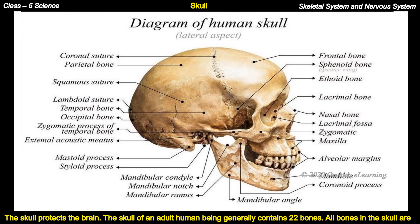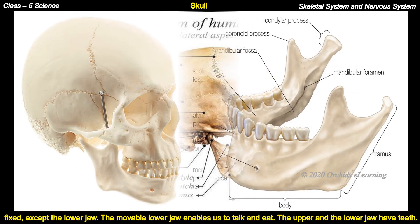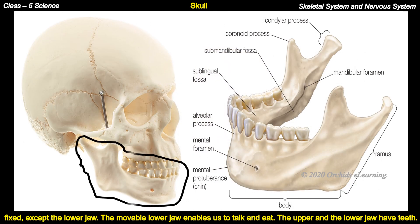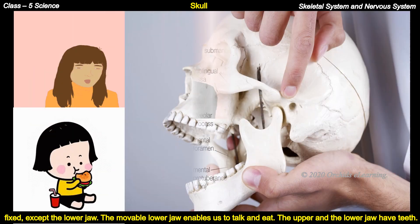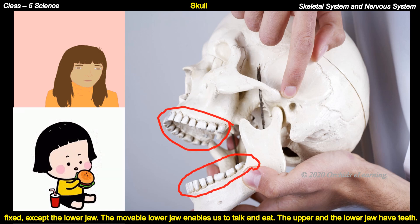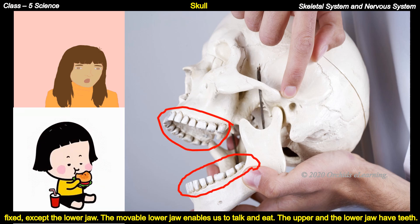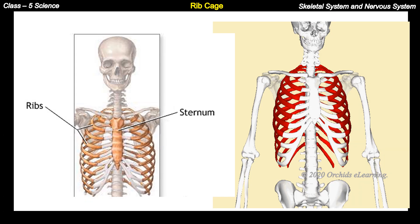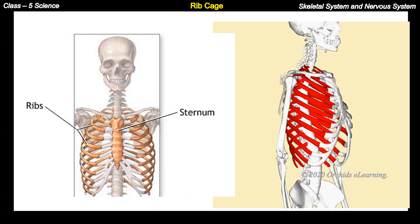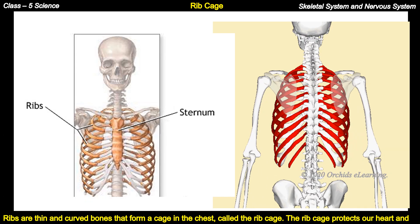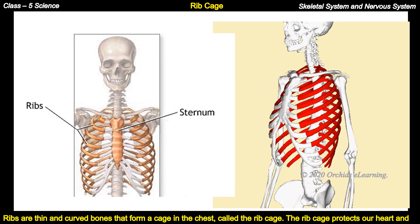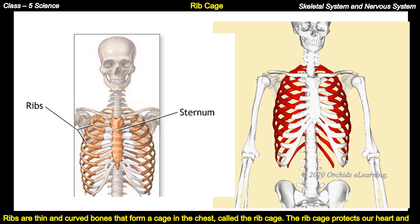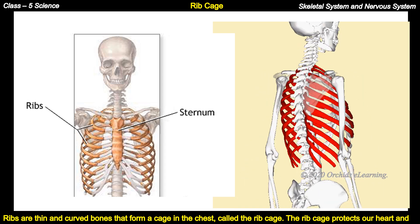All bones in the skull are fixed except the lower jaw. The movable lower jaw enables us to talk and eat. The upper and lower jaw have teeth. Rib cage: ribs are thin and curved bones that form a cage in the chest called the rib cage.